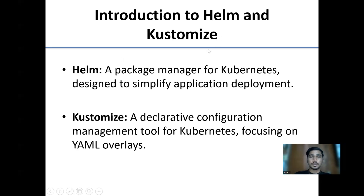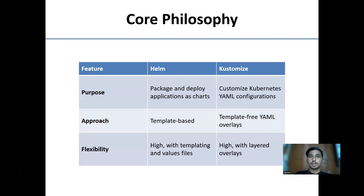Introduction to Helm and Kustomize: Helm is a package manager for Kubernetes designed to simplify application deployment. Kustomize is a declarative configuration management tool for Kubernetes focusing on YAML overlays. The core philosophy: Helm's purpose is to package and deploy applications as charts, while Kustomize's purpose is to customize Kubernetes YAML configurations. Helm's approach is template-based; Kustomize's approach is template-free YAML overlays. Both offer high flexibility — Helm through templating and values files, Kustomize through layered overlays.